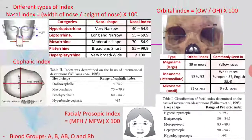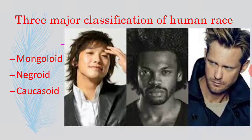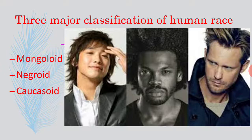Besides these indices, blood group is also used for classification of humans. Here we can find A, B, AB and O types of blood as well as different RH values. Based on those criteria there are three major classifications of human race throughout the world: Mongoloid, Negroid and Caucasoid.